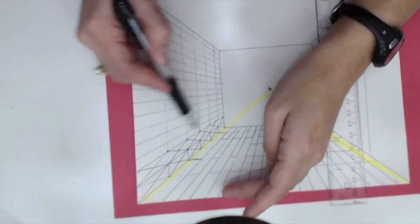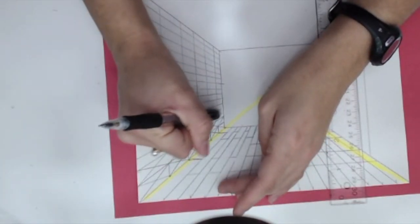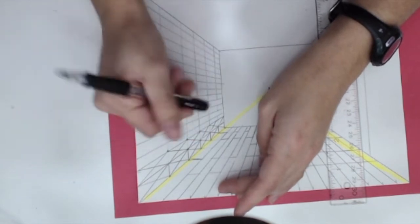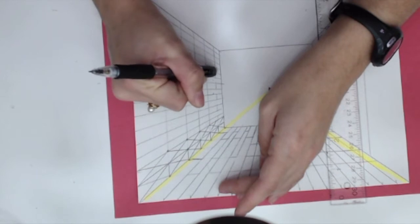Now the important thing to remember about bricks is that the lines between them are not in a perfect grid. They alternate with every other row of bricks. So what I'm doing is I'm just going to take my eraser, and then in every other orthogonal line, I'm going to erase those vertical lines that we just made.